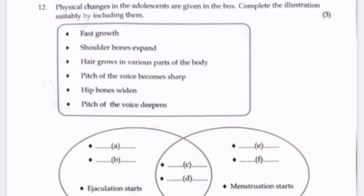Physical changes in adolescence are given in the box. Complete the illustrations suitably by including them. Answer: A. Shoulder bones expand. B. Pitch of voice deepens. C. Fast growth. D. Hair grows in various parts of the body. E. Pitch of voice becomes sharp. F. Hip bones widen.